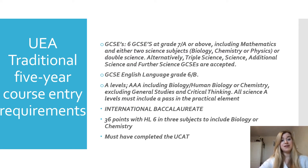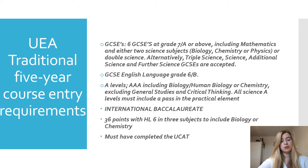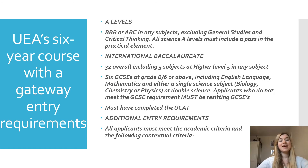Let's look at the entry requirements for UEA's traditional five-year course. For GCSEs, UEA requires six GCSEs at grade seven or A and above, including maths and science subjects, plus English language at at least grade six or B. For A-levels they require three A's including biology, human biology, or chemistry. For the International Baccalaureate they require 36 points, and their website covers Scottish Highers and other alternatives. All applicants must have completed the UCAT in the year they are applying. UEA also offers a six-year medicine with a gateway year course, with slightly lower entrance requirements for candidates who fulfil certain contextual criteria detailed on UEA's website.